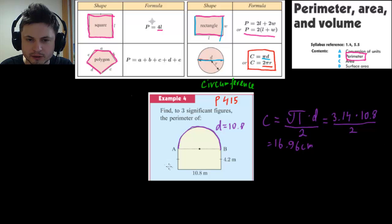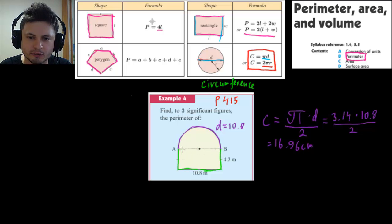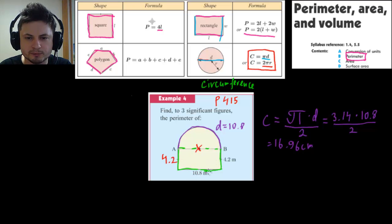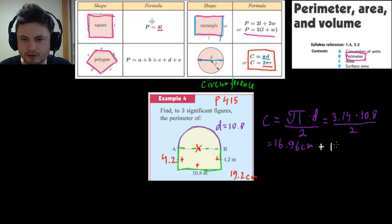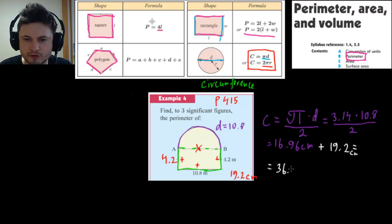The second part is an incomplete rectangle — there's a side here, a side here, and another side here, but one side is missing, so using the full rectangle formula would accidentally count that missing side. It's much easier to just count the three sides and add them up: 4.2 plus 10.8 plus 4.2 equals 19.2 centimeters. Adding 16.96 plus 19.2 and rounding to three significant figures gives a final answer of 36.2 centimeters.